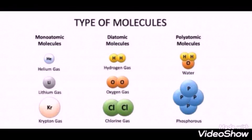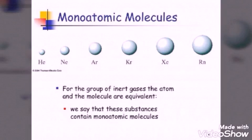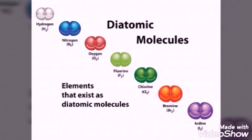Molecules are of different types. If only one atom is present in a molecule then it is said to be monoatomic molecule. All the noble gases like helium, neon, argon, xenon, krypton are considered to be monoatomic.